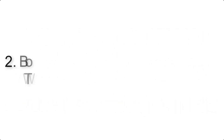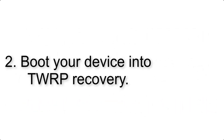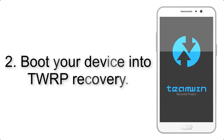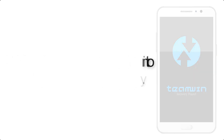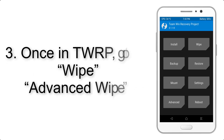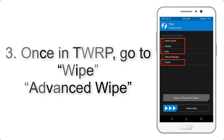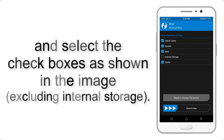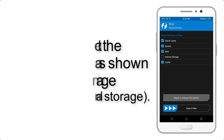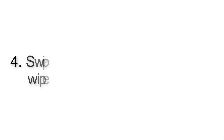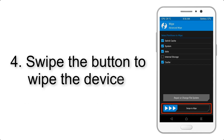Step 2: Boot your device into TWRP recovery. Once in TWRP, click on Wipe, then Advanced Wipe, and select the checkboxes as shown in the image, excluding internal storage. Step 4: Swipe the button to wipe the device.